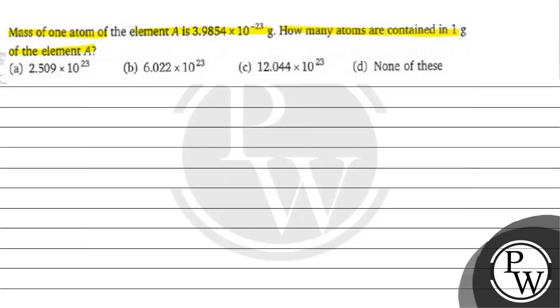Option A: 2.509 into 10 raised to the power 23. Option B: 6.022 into 10 raised to the power 23. Option C: 12.044 into 10 raised to the power 23. Option D: None of these.